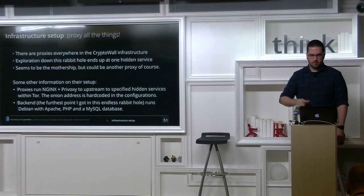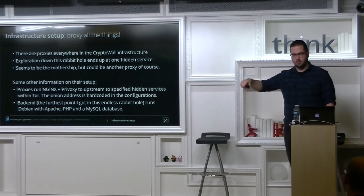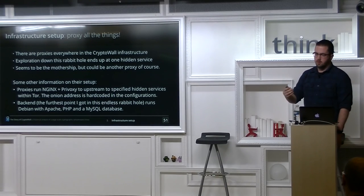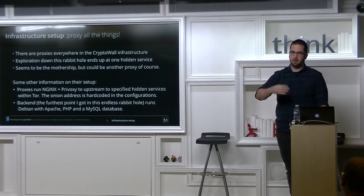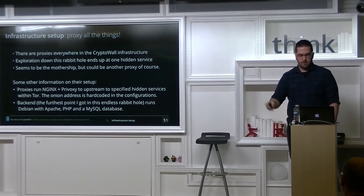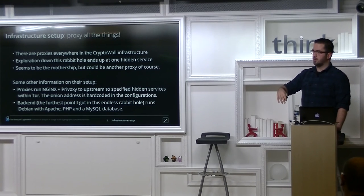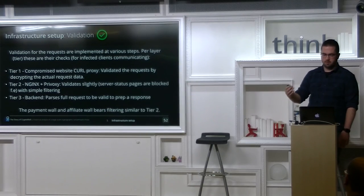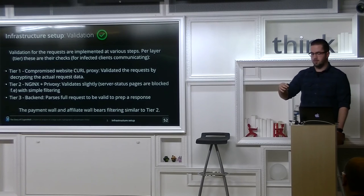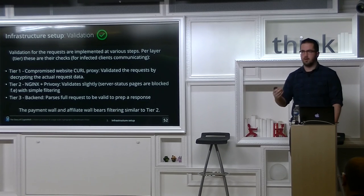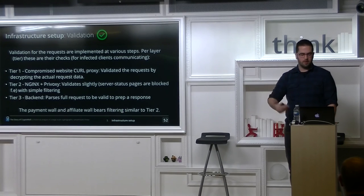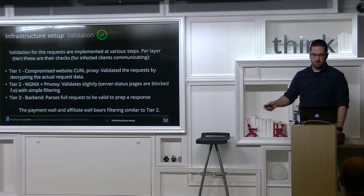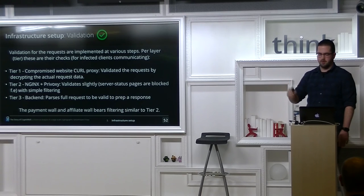To get to the backend you need to explore every next hop. Outside proxies are Nginx with Privoxy upstreaming to specific hidden services — either the affiliate page or the payment wall. They also have validation at each layer: tier one decrypts and checks requests for validity; tier two validates the actual POST request location so you can't do server-side request forgery anymore; the backend fully parses requests to confirm what you're doing. The payment wall and affiliate systems similarly filter specific requests.